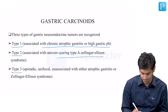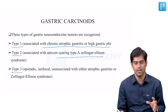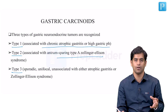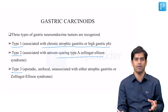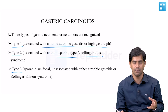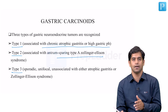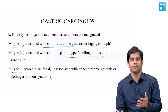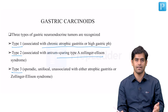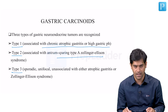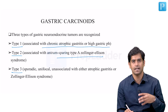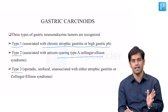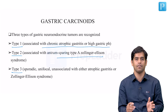Then we have Type 3, which is predominantly serotonin-producing enterochromaffin cell hyperplasia. It is not related to increased gastrin production as happens with Type 1 and Type 2. Then we have Type 4, which is parietal cell hyperplasia, independent of all three.